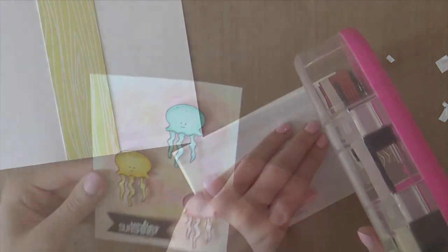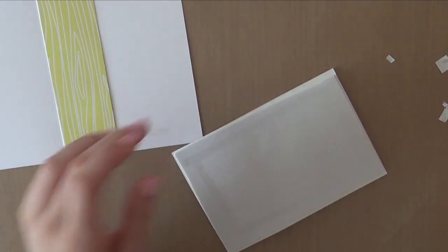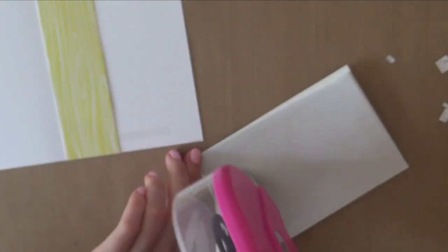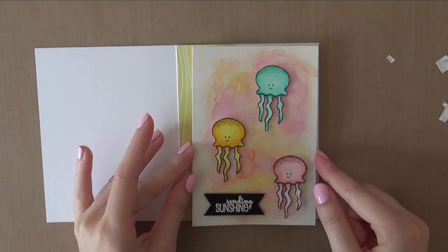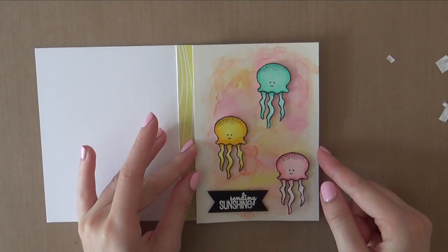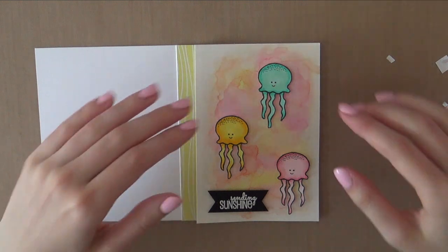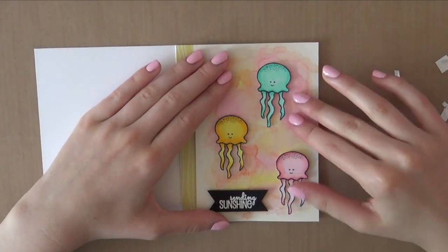So for the watercolor piece I used some fun foam since that piece was just so warped up from the heat from my heat tool. So I just adhered a sheet of fun foam on there using my ATG. But you could also just use foam squares if the paper isn't all warped up.